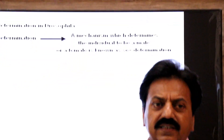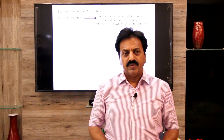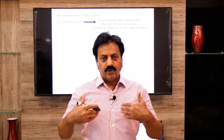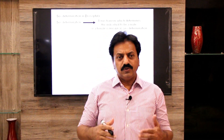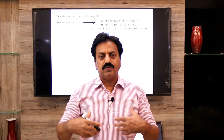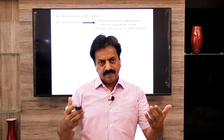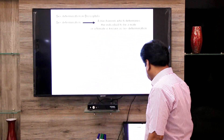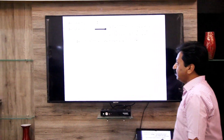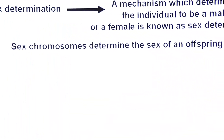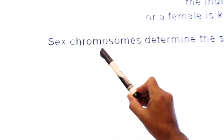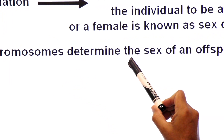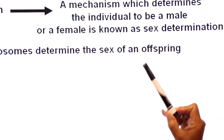Sex Determination aise process ko kaha jata hai jis mein zygote ke baad jo embryo banta hai, uski sex ko determine kiya jata hai chromosomes ke through. Aapne padha hoga doh types chromosomes ke — autosomes aur sex chromosomes — and the sex is determined by sex chromosomes. So the sex of an embryo is determined by sex chromosomes.